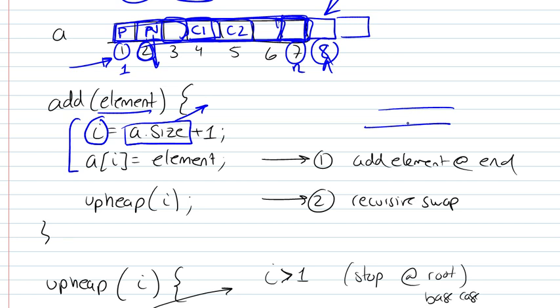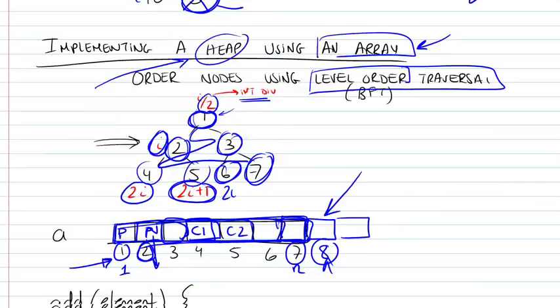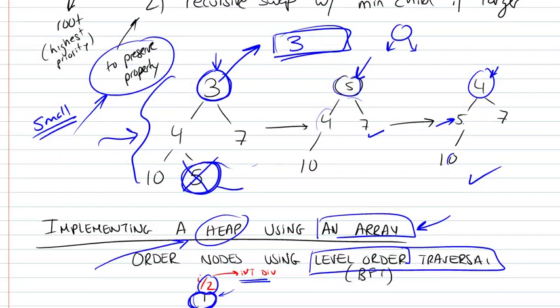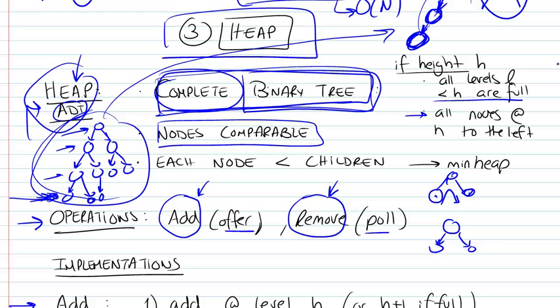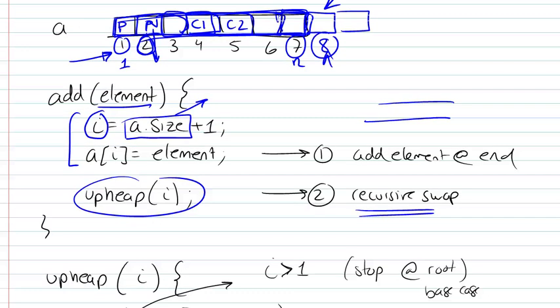And then, so this is our addition, and don't forget there was another part to the addition implementation. We said we're going to have to swap it with its parent if it happens to be smaller than the parent. So we're going to perform this recursive swap that we call upheap. So we push it up if it happens to be larger. Because remember, in a heap we said that every node is smaller than its children. This we call the minheap. So if the children happen to be larger than the parent, then we're going to have to swap it with the parent.